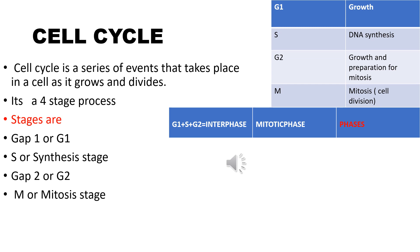There are four stages in the cell cycle: Gap 1 or G1, S or Synthesis stage, Gap 2 or G2, and M or the Mitosis stage. Gap 1, S, and G2 together are called the Interphase stage, which is the longest phase of the cell cycle. The next stage is called the Mitotic phase.